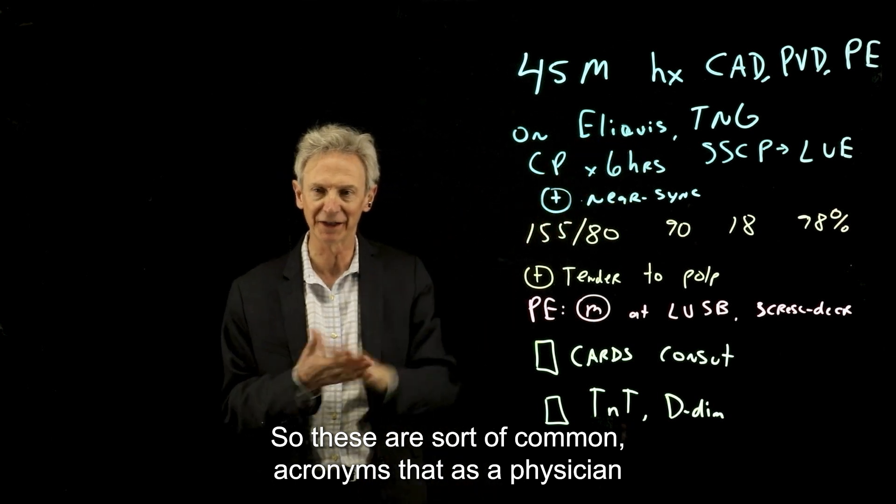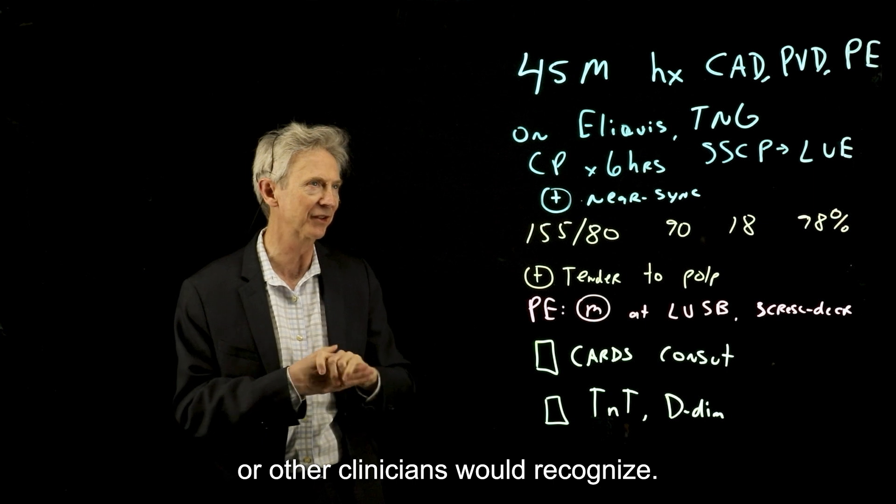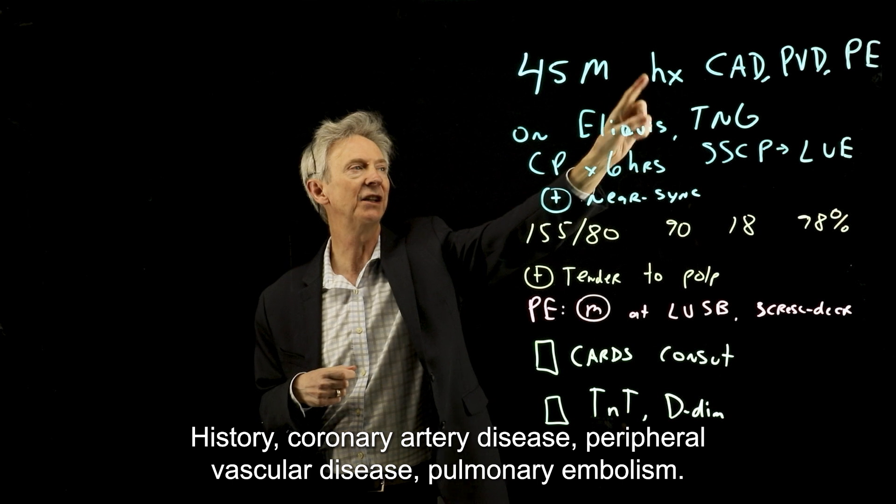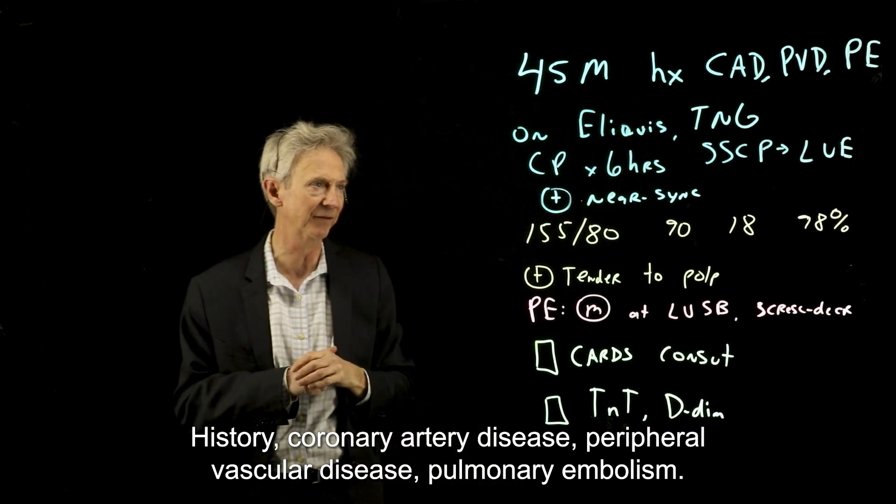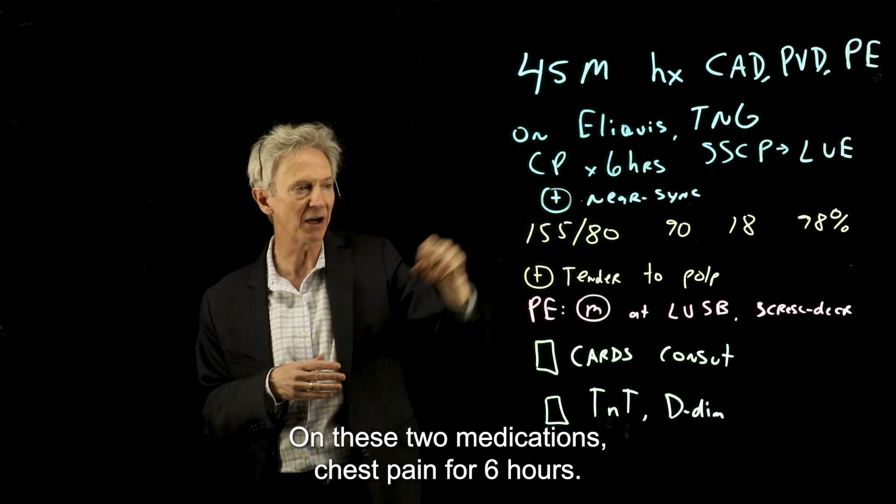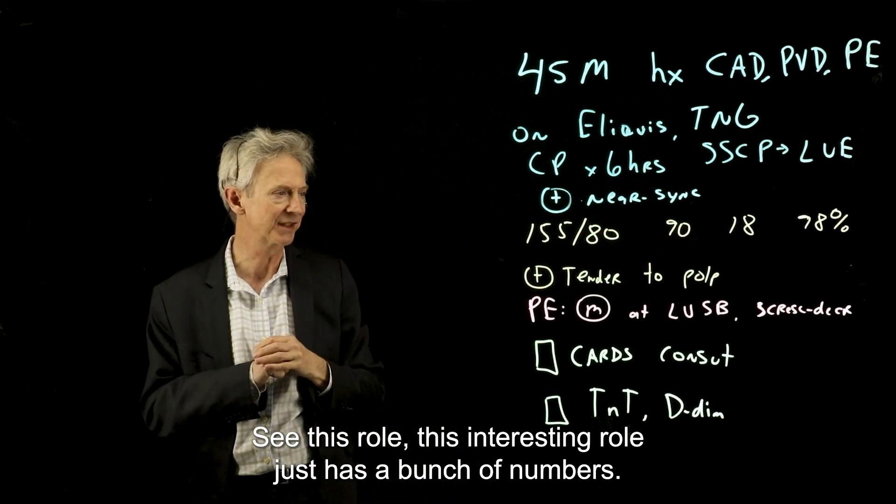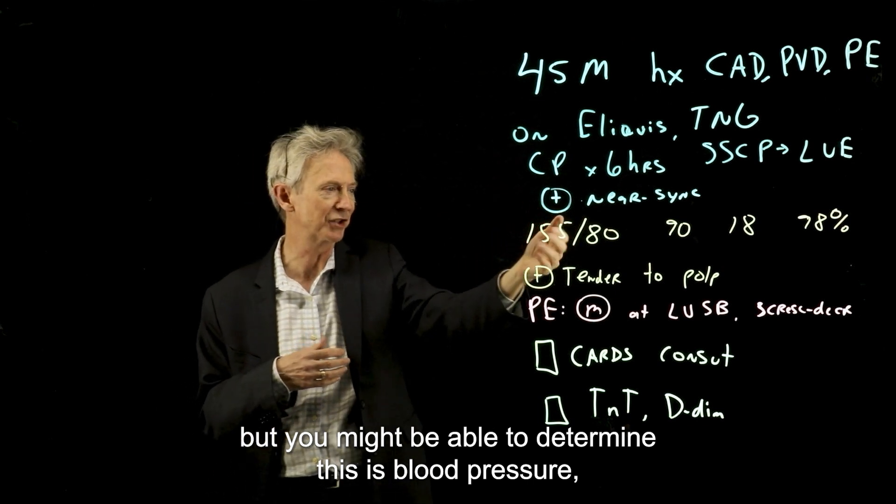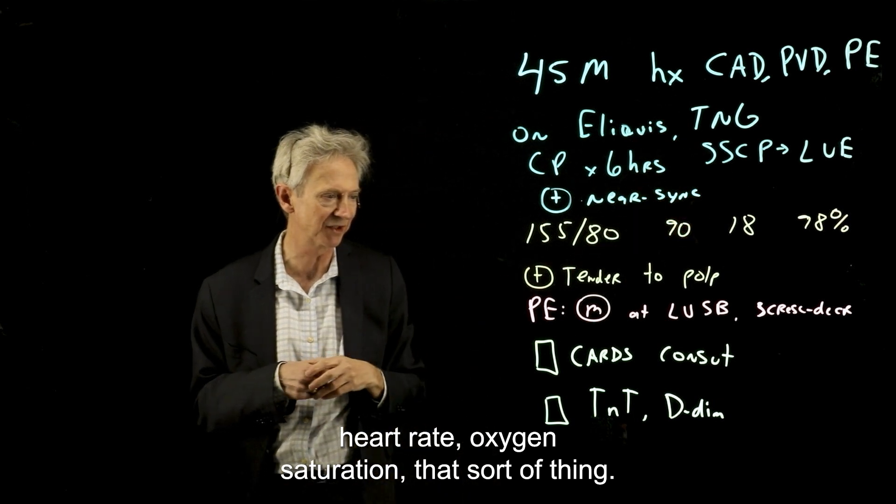So these are sort of common acronyms that as a physician or other clinicians would recognize. So 45M, this is a 45-year-old male, history, coronary artery disease, peripheral vascular disease, pulmonary embolism. On these two medications, chest pain for six hours. See this row, this interesting row, it just has a bunch of numbers. But you might be able to determine this is blood pressure, heart rate, oxygen saturation, that sort of thing.